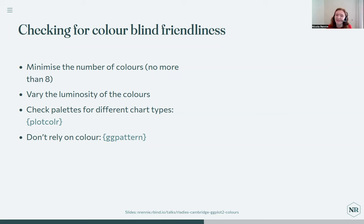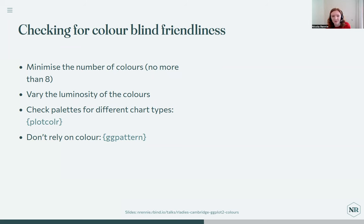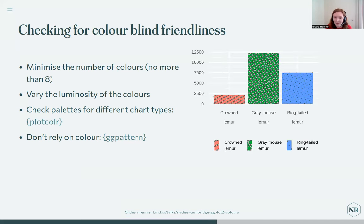Despite the fact that this entire talk is about colors, the most helpful thing I can say is: don't rely on color alone. Human beings in general aren't always great at interpreting colors, and when you add in accessibility issues, it's important not to just use color. In a scatter plot, points should also have different shapes if they have different colors. For bar charts, the ggpattern package can add patterns of dots or stripes as well as colors.